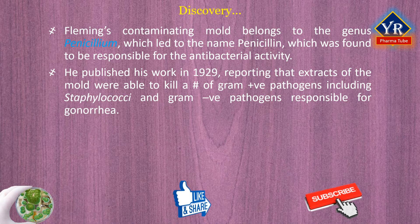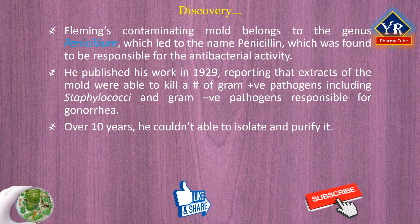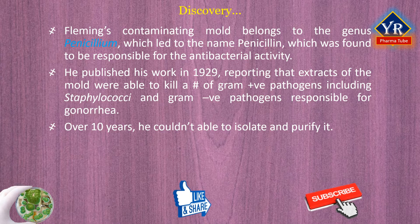Fleming published his work on penicillin in 1929, reporting that extracts of the mold were able to kill a number of gram-positive pathogens in addition to the Staphylococci, and even the gram-negative pathogen responsible for gonorrhea. Over the next 10 years, Fleming tried to progress penicillin further but was hampered by an inability to isolate and purify it. Early attempts to use crude penicillin topically in patients were not very successful, and Fleming did little further work on its clinical potential, focusing instead on its utility as a bacteriological reagent.